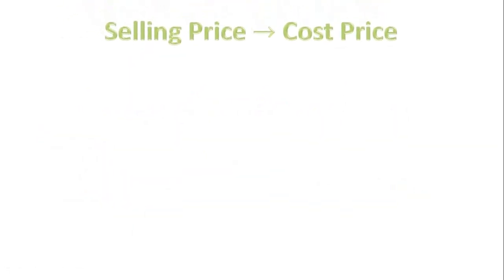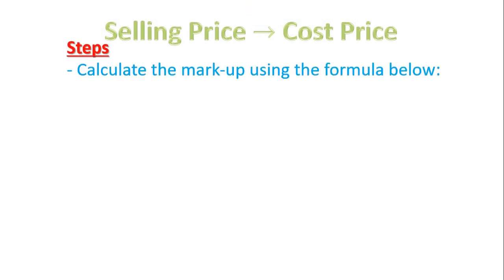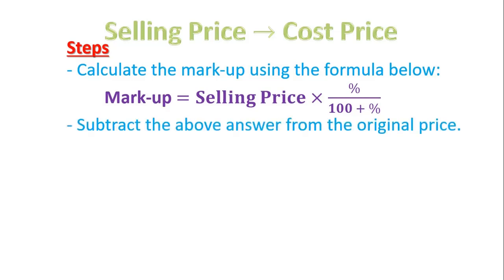Now let's go the other way, from selling price to cost price. So we have to calculate the markup using the formula below. Our formula is: markup equals selling price times the percentage over 100 plus the percentage. Now that formula looks terrible, but when we use it you'll see it's not so bad. Please guys, you have to remember this formula off by heart. Once you've worked that out, our second part is subtract the above answer from the original price.